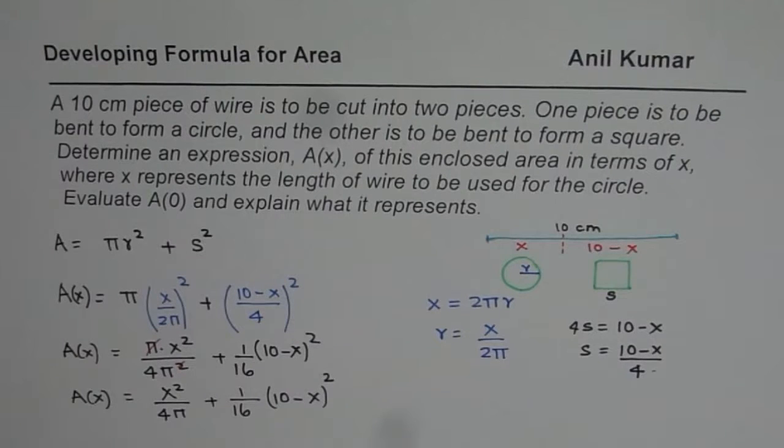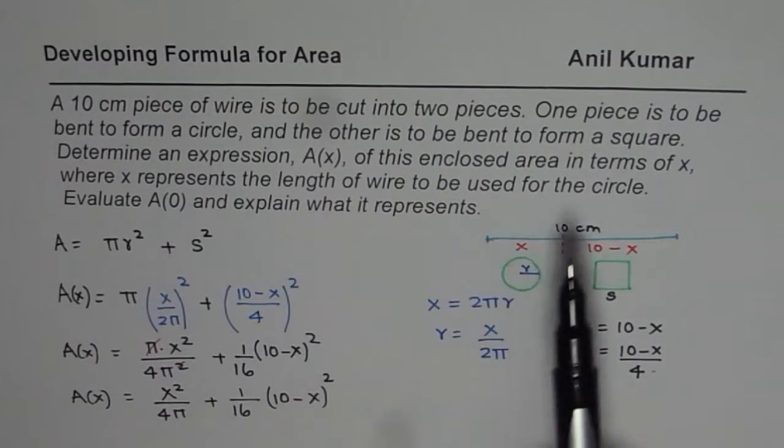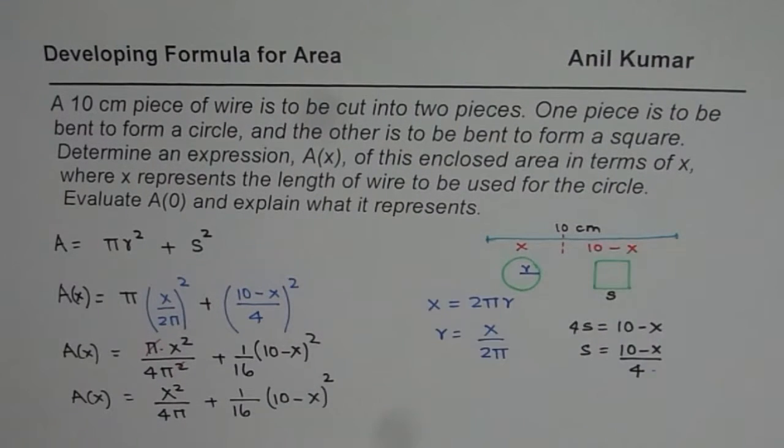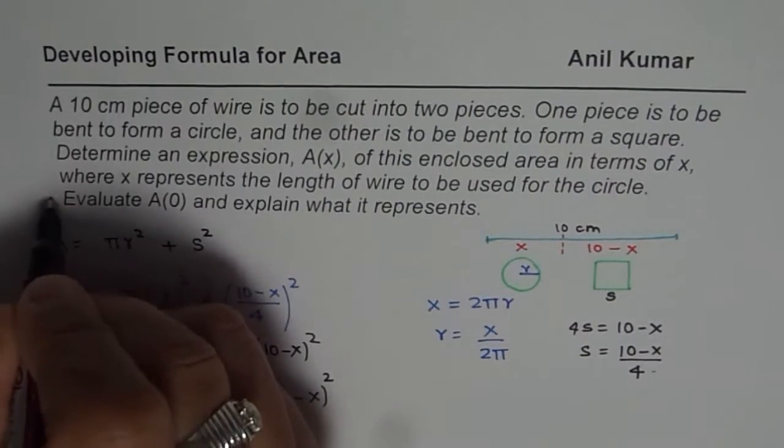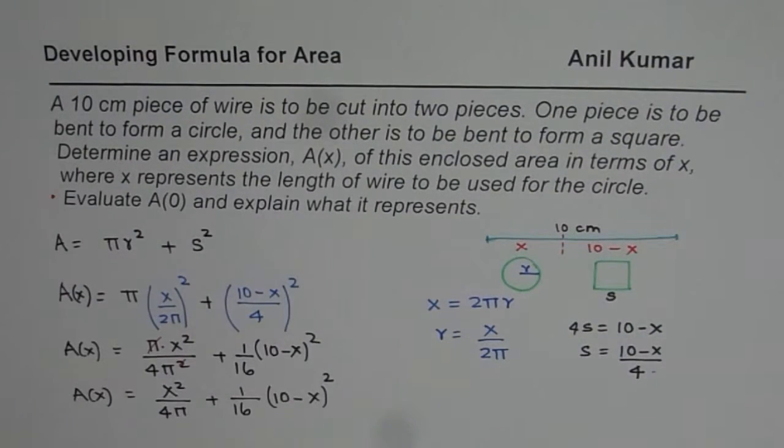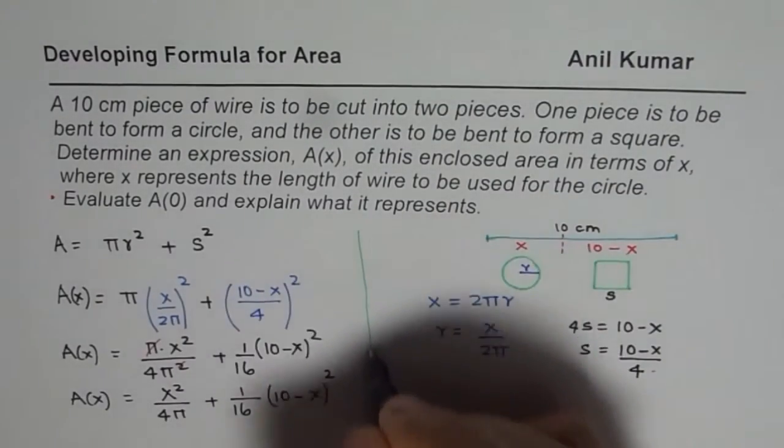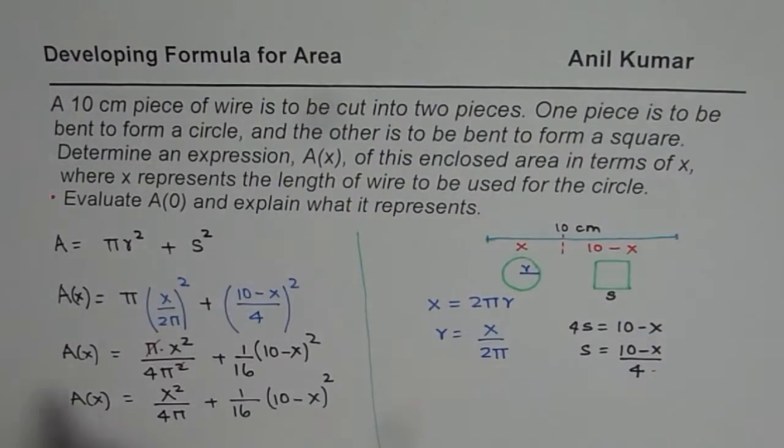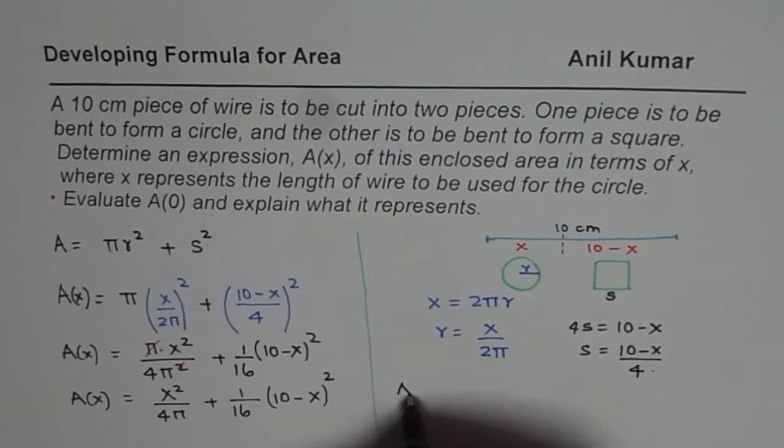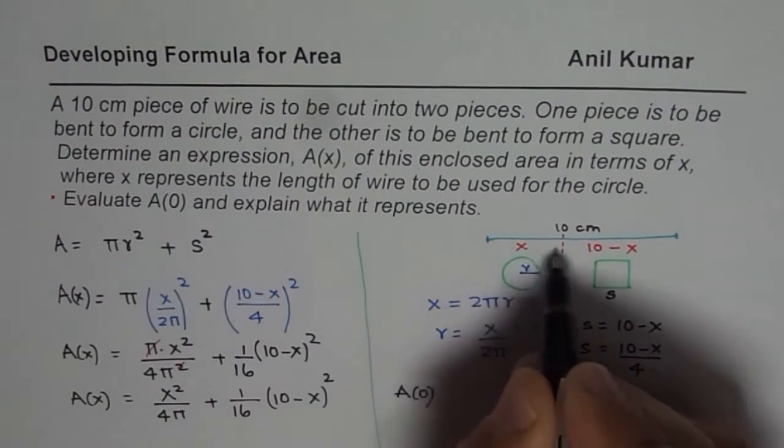Now let's look into the second part of the question which is evaluate A(0). So let us find what is A(0). A of zero means x is zero. When x is zero, then the whole length will be used for square.